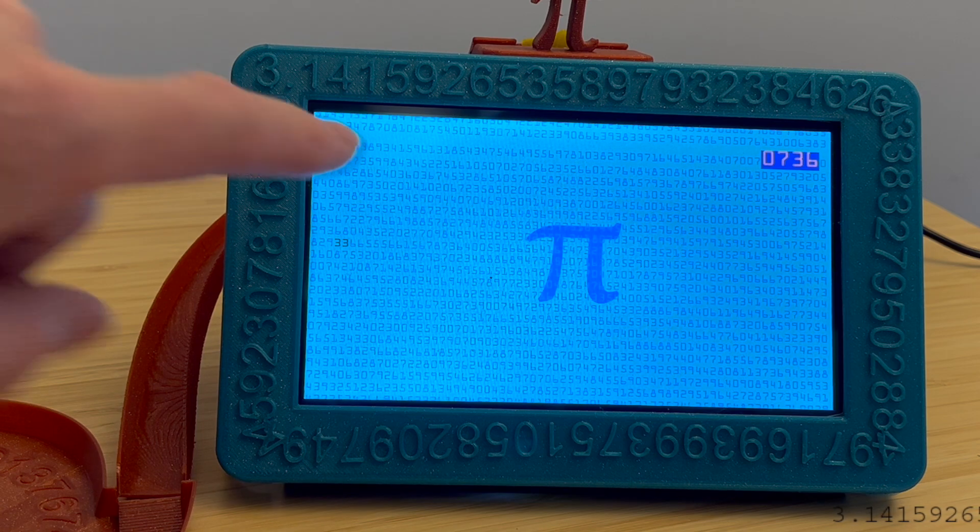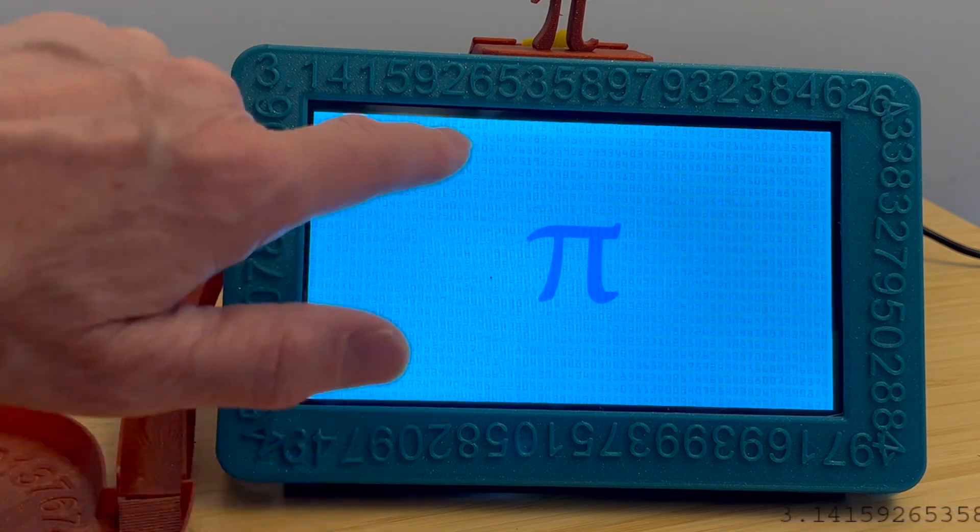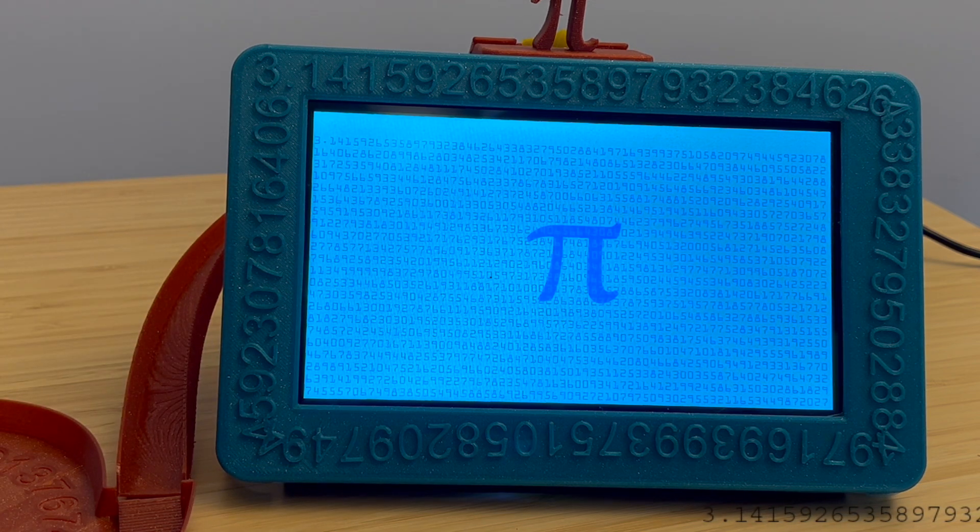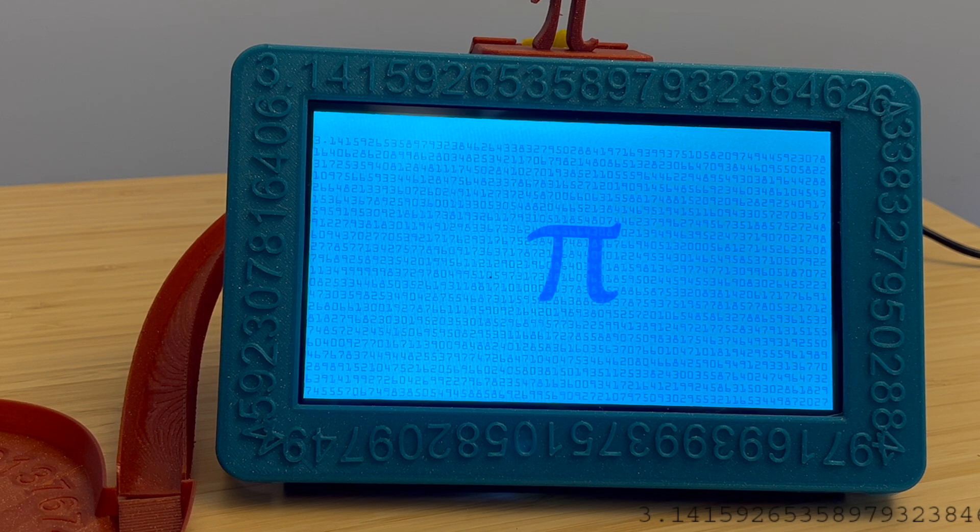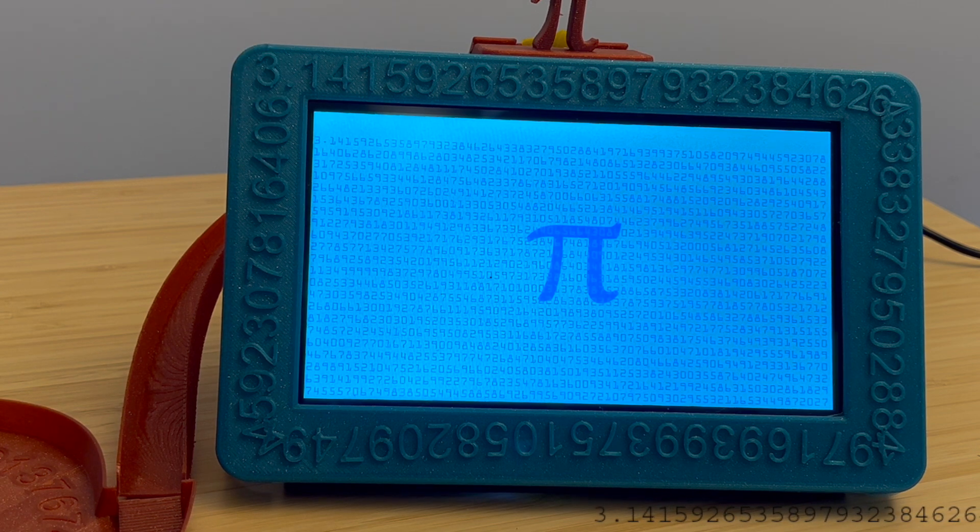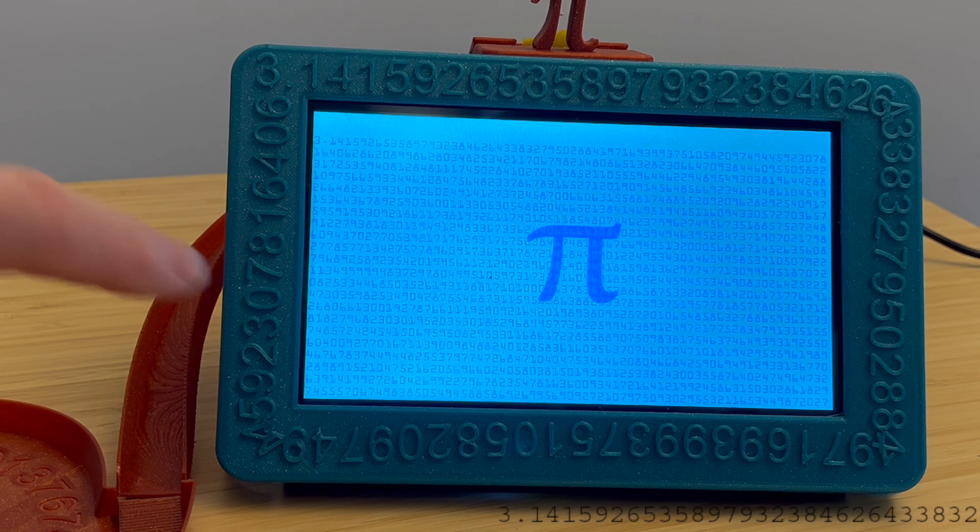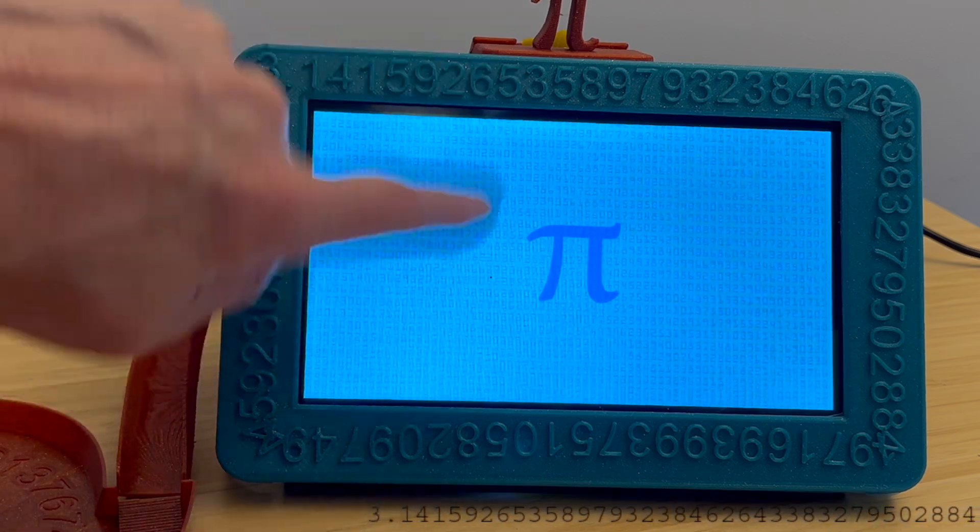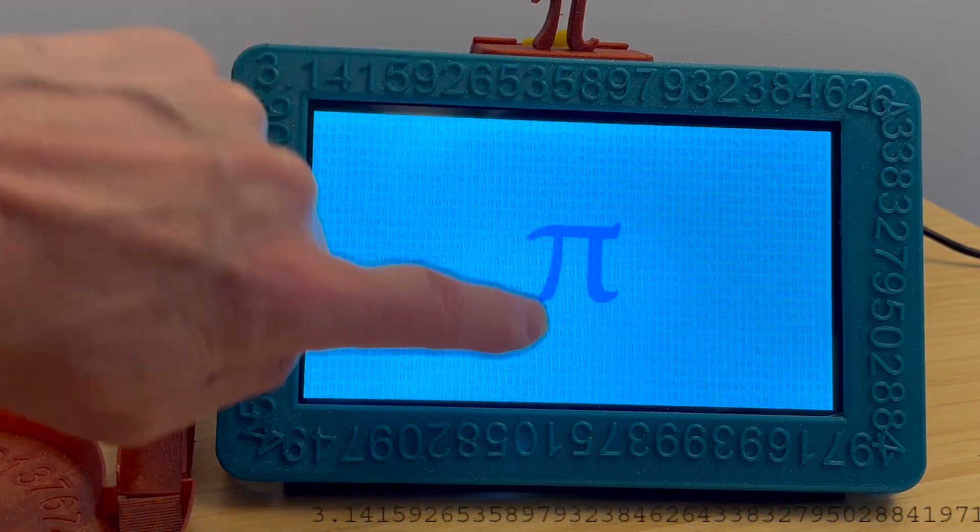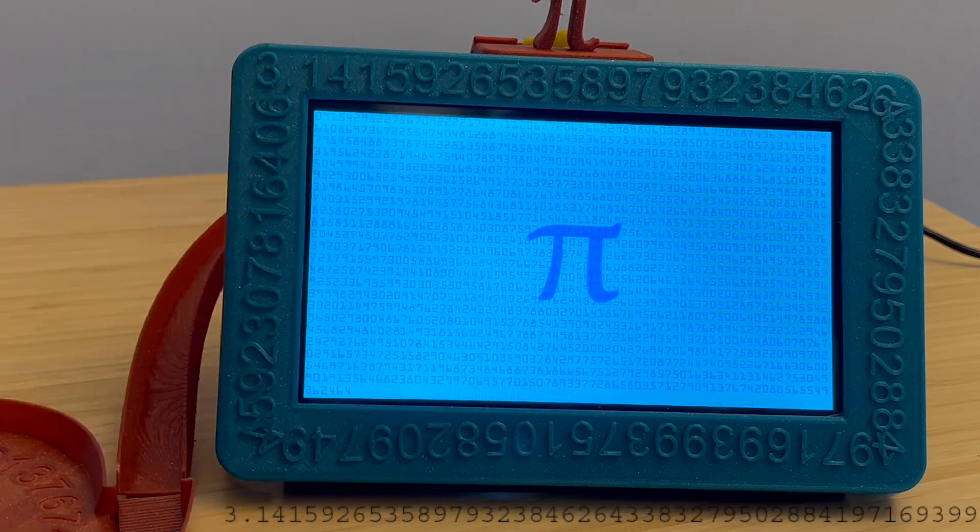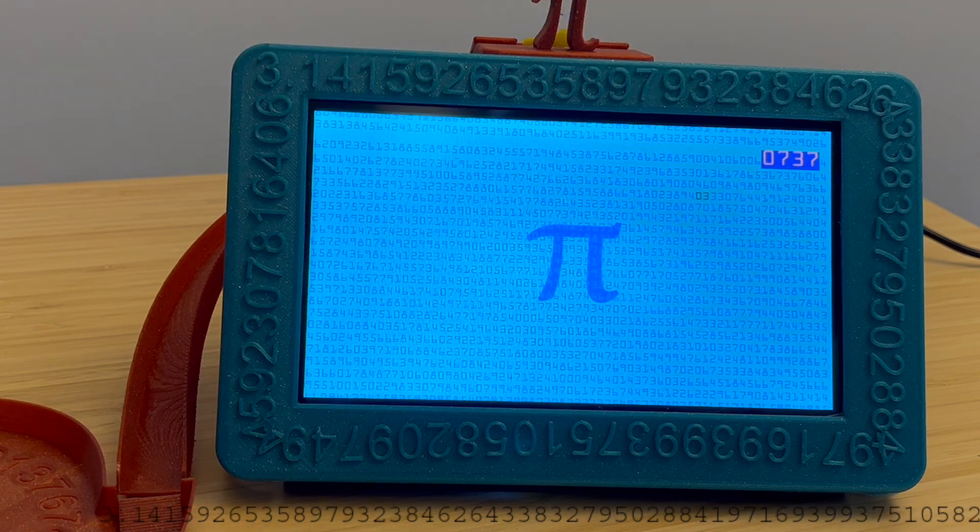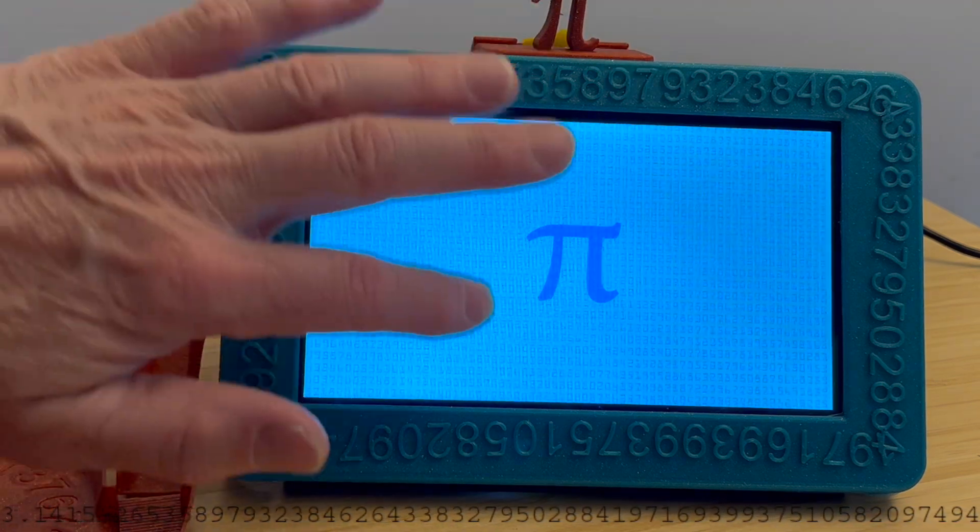When it gets to 7:37 it'll scroll. But what's interesting, you can see I scrolled all the way to the top, we weren't that far into Pi. You can see 3.14159265, etc., etc. I don't know, maybe there's somebody who's memorized all these. It's certainly not me, but if you're curious what the hundred thousandth - oh hey, 7:37 scrolled automatically.